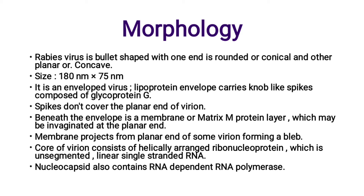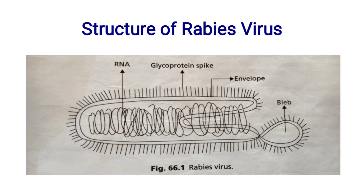The core of the virion consists of helically arranged ribonucleoprotein, i.e., unsegmented linear single-stranded RNA. The genetic material of Rabies Virus is single-stranded RNA. The nucleocapsid also contains RNA-dependent RNA polymerase enzyme.